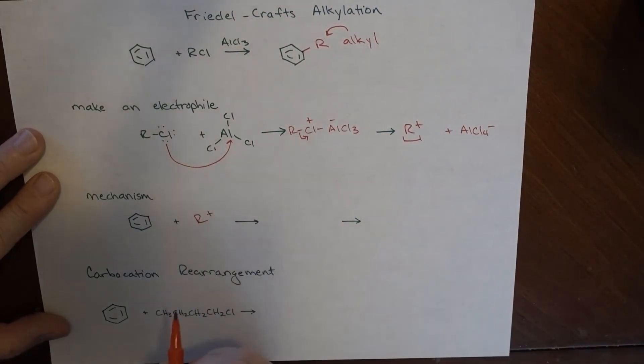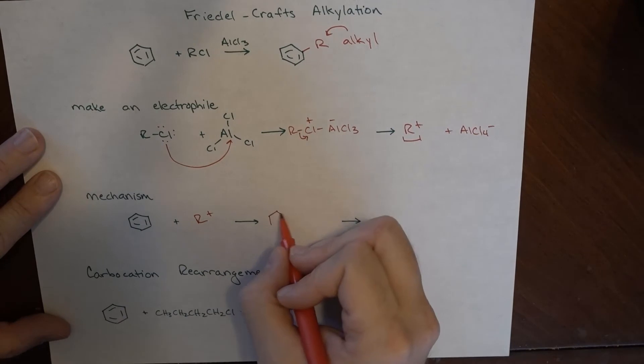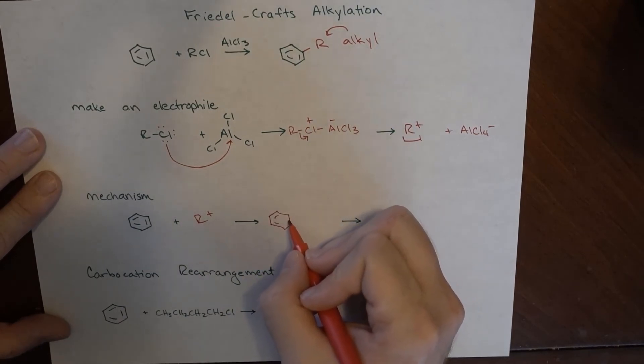So our R plus ends up adding here and keeping all the double bonds in the same place. So if my R goes here, there's still an H here.